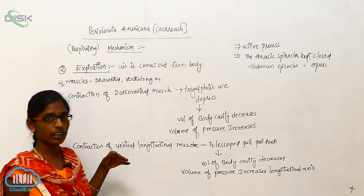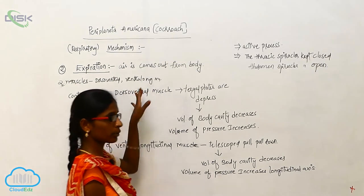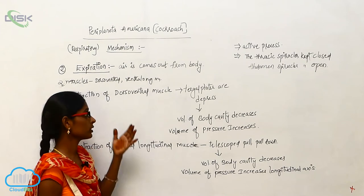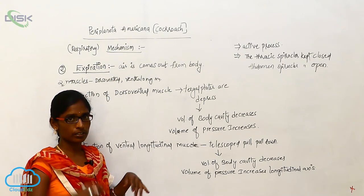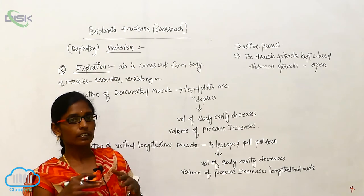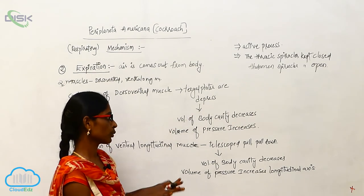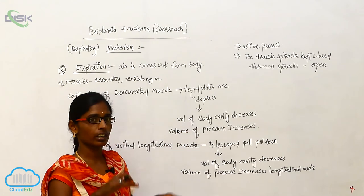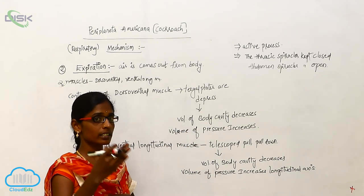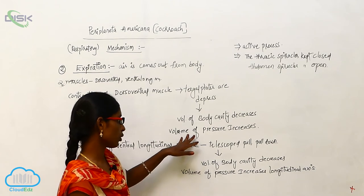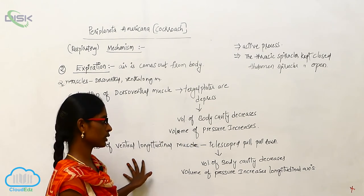In expiration, two muscles are involved: the dorsal ventral muscle and the ventral longitudinal muscle. Contraction of the dorsal ventral muscle causes the tergal plates to be depressed, and the volume of body cavity decreases, which increases the pressure of body cavity.